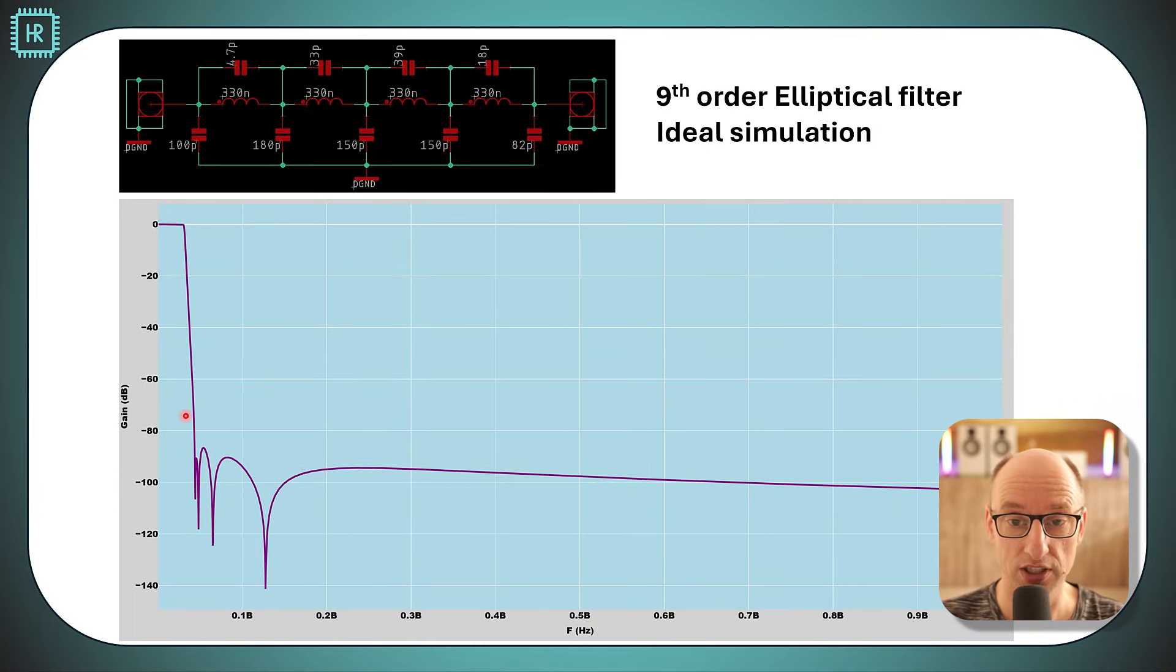Here you see the ideal simulation of this filter and here you see the four very deep dips. Now we can never realize this in practice because we cannot have ideal components. You also see five capacitors to ground that help with the overall low pass nature.